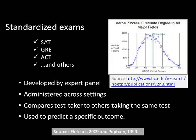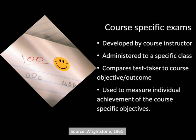Standardized testing, such as the GRE, SAT, or ACT, are measures of knowledge used across settings. These tests compare the test taker to others taking the same test. These examinations are usually developed by a panel of experts and provide a psychometrically established measure that is predictive of a specific outcome. On the other hand, course-specific examinations are developed by the course instructor for the assessment of individual achievement of specific course objectives. Course-specific examinations are the focus of the remainder of this presentation.